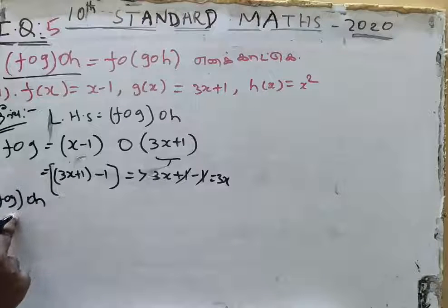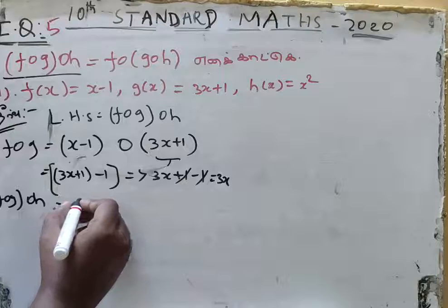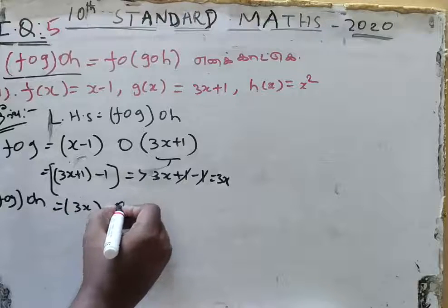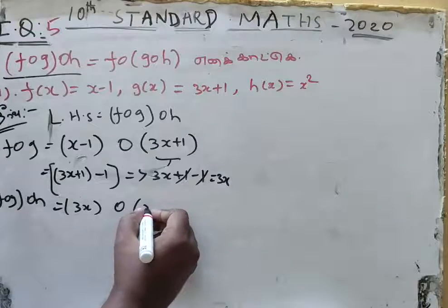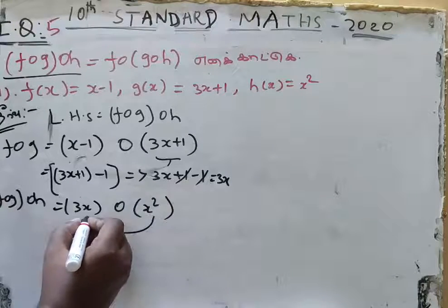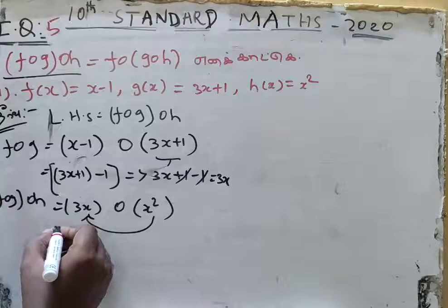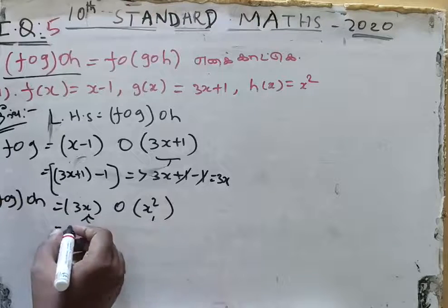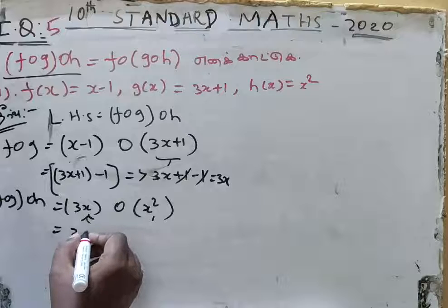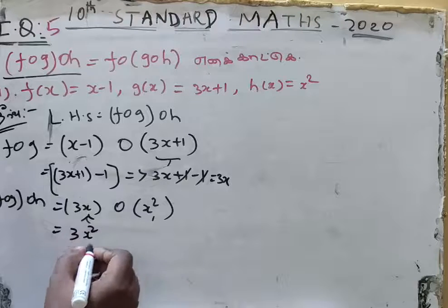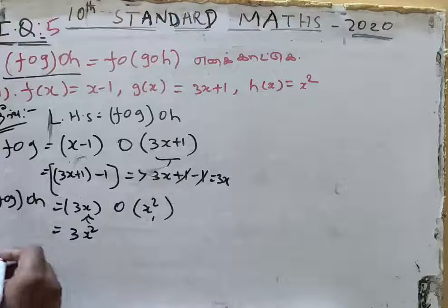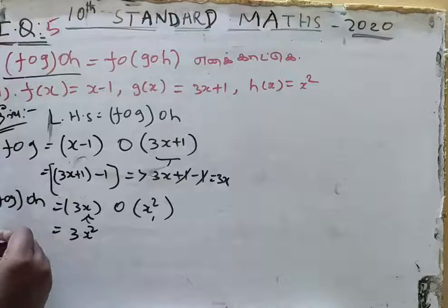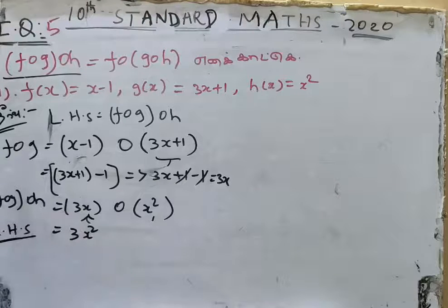Now we compute f of g of h, substituting h. The value of h is x squared. So the value of x becomes x squared.